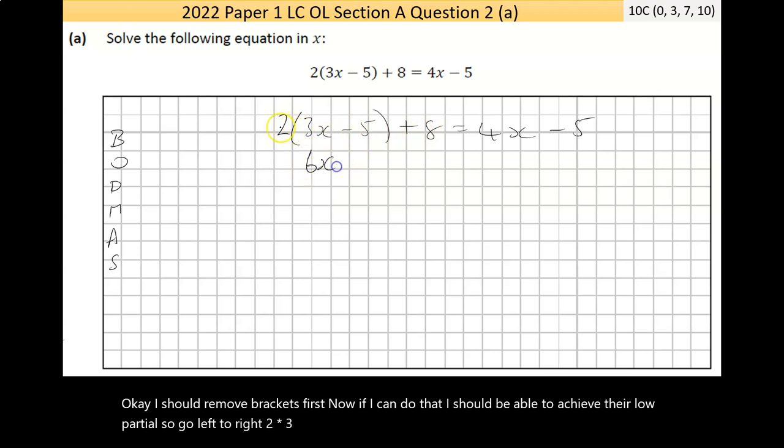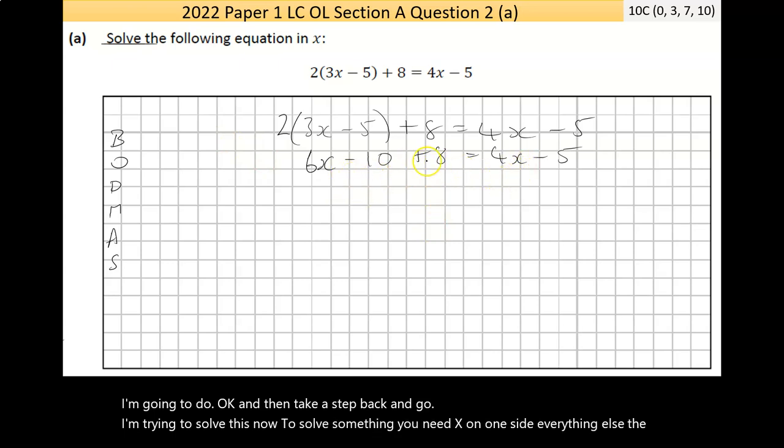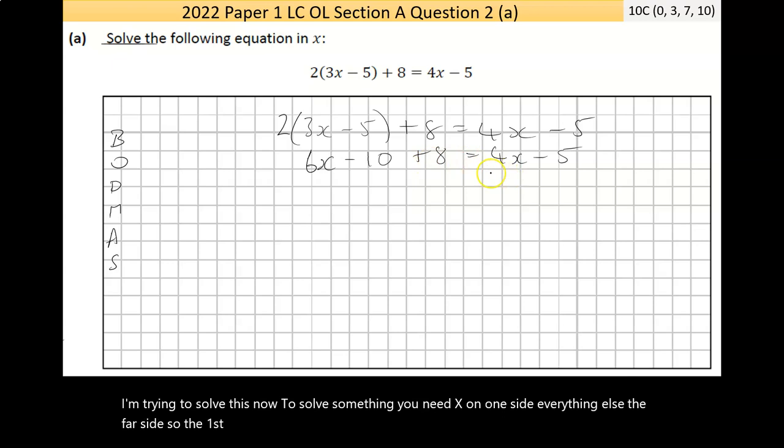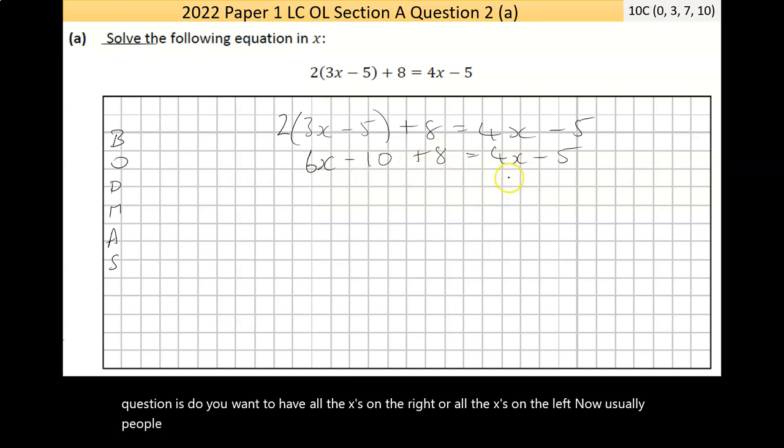2 times 3x is 6x. 2 times negative 5 is negative 10. That's all I'm going to do, and then take a step back. I'm trying to solve this. Now, to solve something, you need x on one side, everything else the other side. The first thing I see here is, I don't have the x's on one side. So the question is, do you want to have all the x's on the right or all the x's on the left? Usually people prefer to have all the x's on the left.